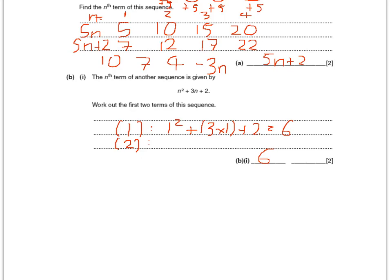The second term, we're going to put 2 in. So 2 squared plus 3 times 2 plus 2. 3 times 2 is 6, remember. So 2 squared is 4, add 6 is 10, add 2 is 12. So that is how you find the first two terms of a sequence.